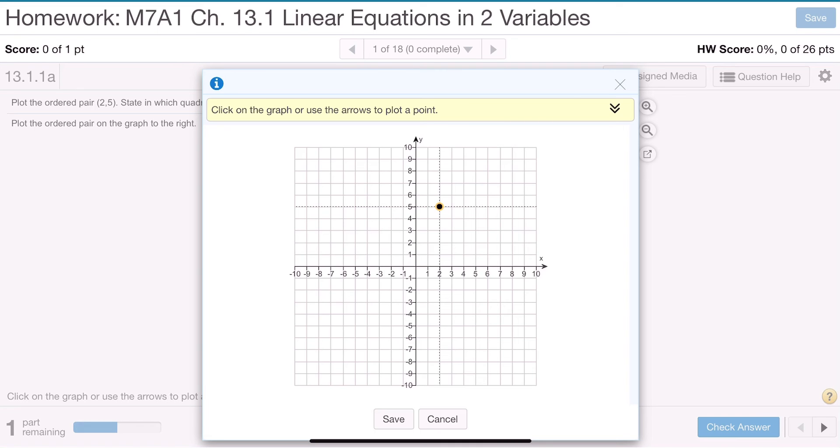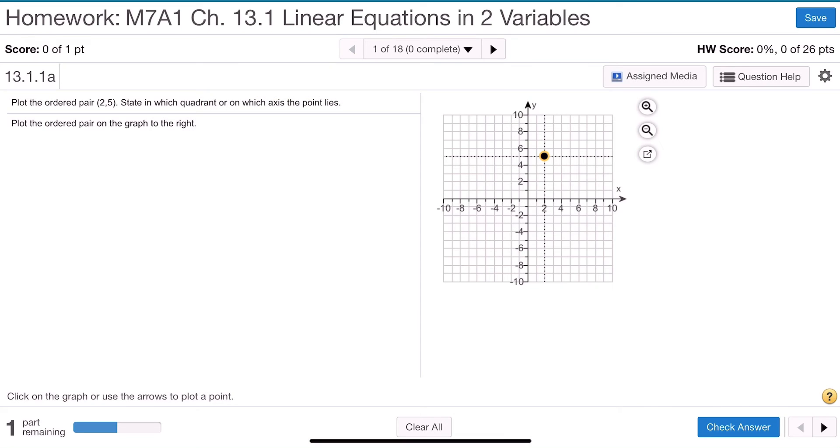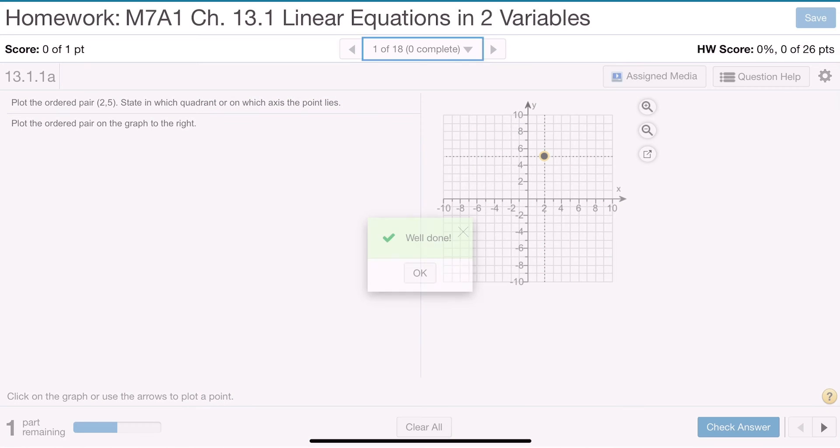If I think that's the correct answer, I hit save, and then I check my answer, and if it's correct, you'll be allowed to go on to the next question, or try the question again. So that's how easy it is to plot an ordered pair.